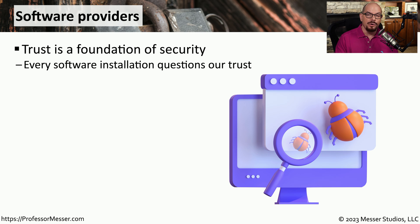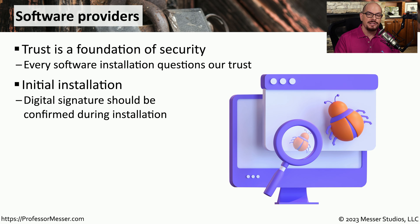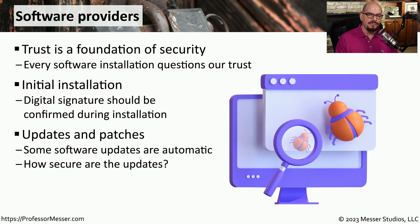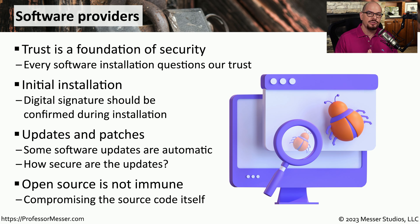Whenever you're installing new software or updating existing software, you should ask yourself: do I really trust this update or installation? Trust is a foundation of everything we do in security. One way to verify trust is to look at the digital signature associated with the installation — most operating systems will validate a digital signature in an update or installation file and inform you if it doesn't validate. Another challenge is when software updates itself automatically, meaning anything could be installed during that automated process. Even open source software has challenges — when someone has access to the code, they also have the ability to make changes, and some of those changes could be malicious.